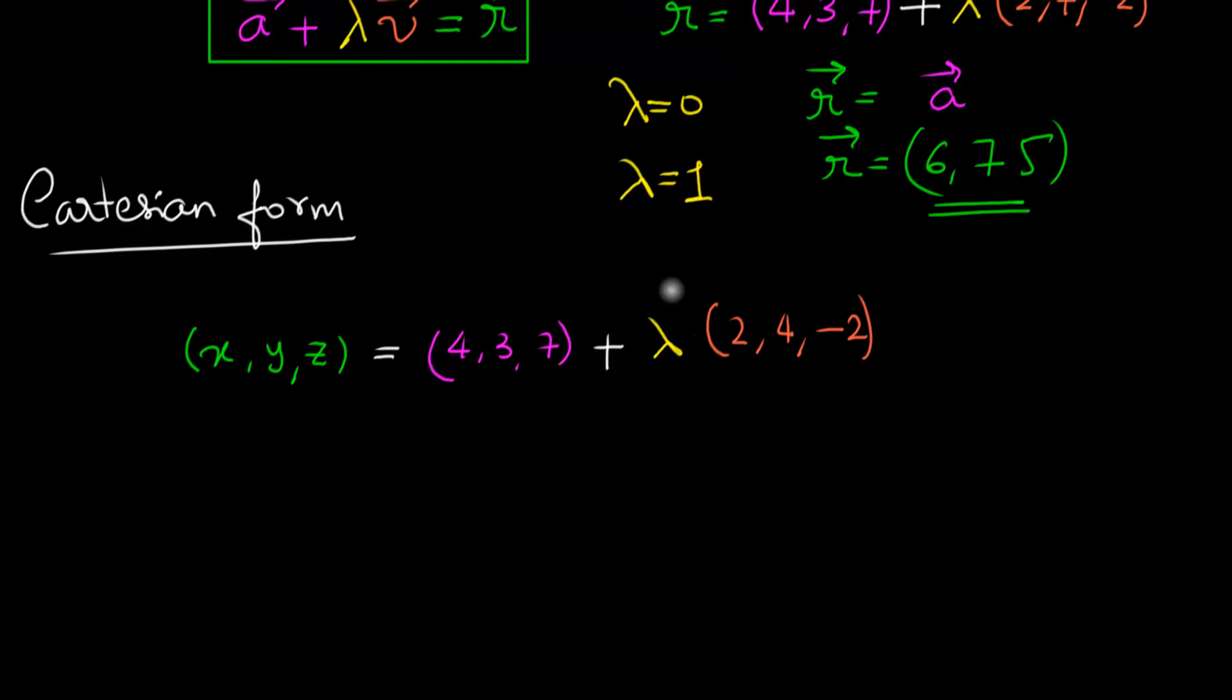Well, I'll calculate what lambda is from this equation. But notice, this equation should work independently for i cap, j cap, and k cap. So if I write this for i cap, j cap, and k cap, I can write the equation like this: x must be equal to 4 plus 2 lambda.